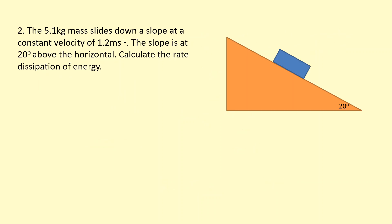Okay, so in this question we have a 5.1 kilogram mass sliding down a slope at a constant velocity of 1.2 meters per second. The slope is at 20 degrees above the horizontal. Calculate the rate of dissipation of energy.